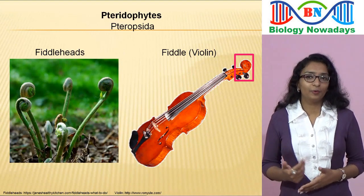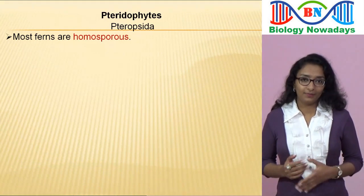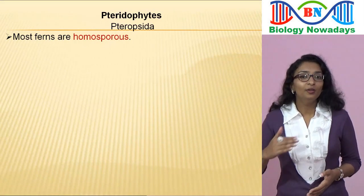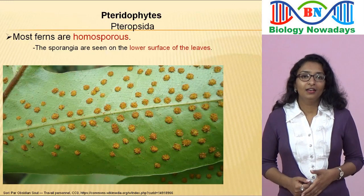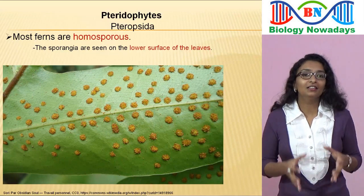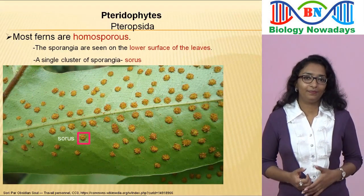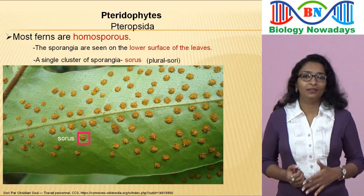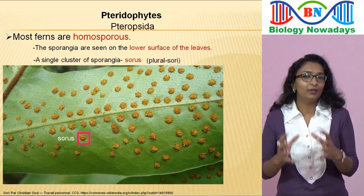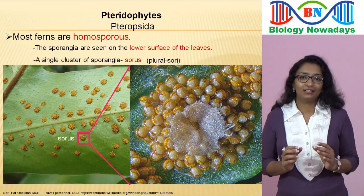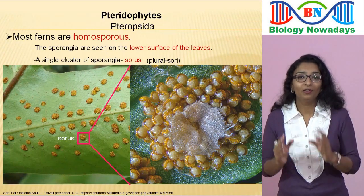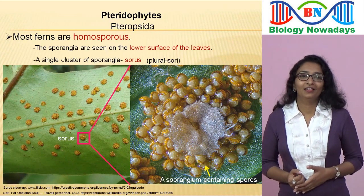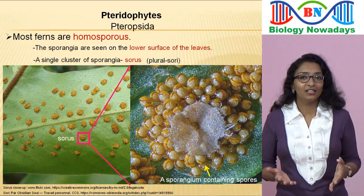Most ferns are homosporous, producing only one type of spore. Spores are produced in sporangia grouped into clusters called sori on the lower side of the leaf. A closer look at a sorus reveals many tiny ball-like sporangia, each containing many spores. Haploid spores are produced in sporangia after meiosis division.